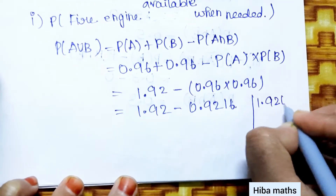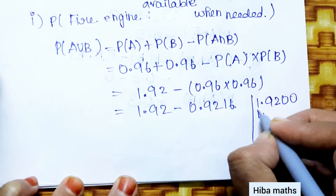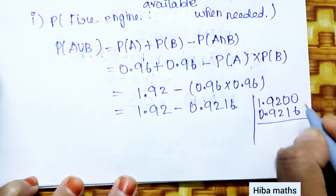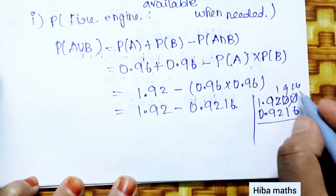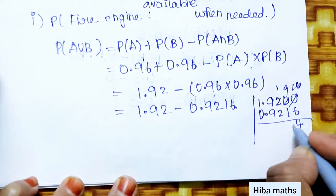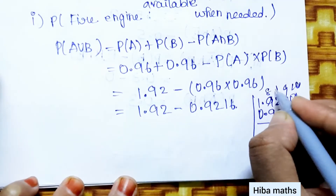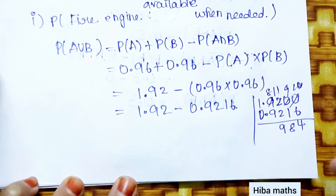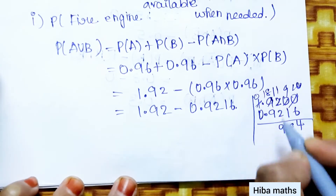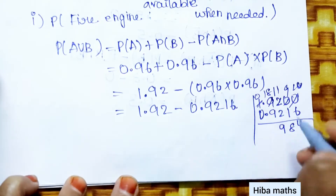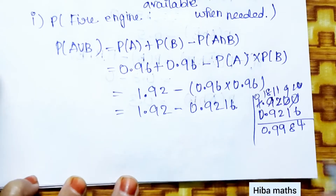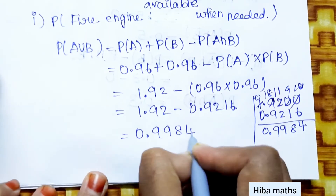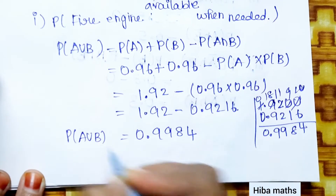Computing: 1.9200 minus 0.9216 equals 0.9984. So P(A∪B) = 0.9984.